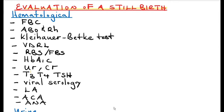For evaluation of a stillbirth, carry out tests to determine the cause. A full blood count screens for anaemia or signs of infection. You can also do an ABO and Rhesus incompatibility test, as well as a Kleihauer-Betke test — a blood test measuring the amount of fetal haemoglobin transferred into the mother's bloodstream, usually performed on Rhesus-negative mothers to determine the dose of immunoglobulin needed to inhibit Rhesus antibody formation and prevent Rhesus disease in future pregnancies.